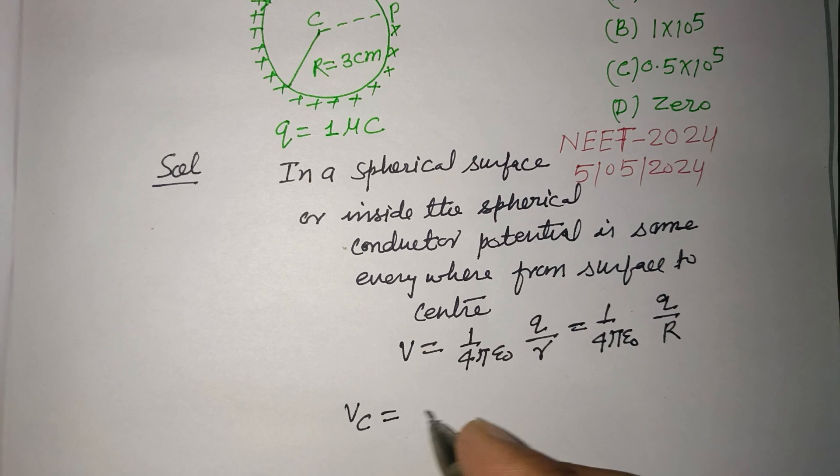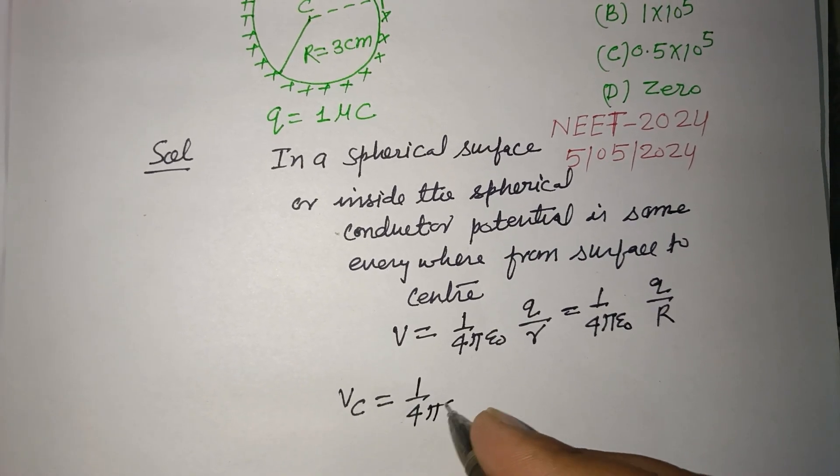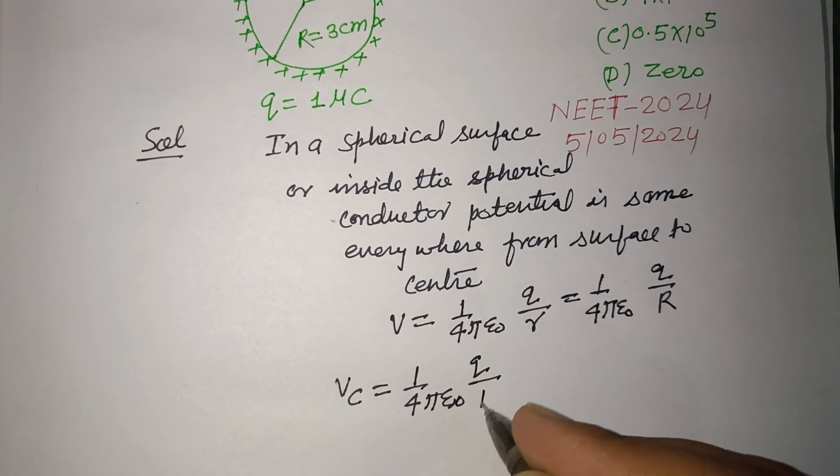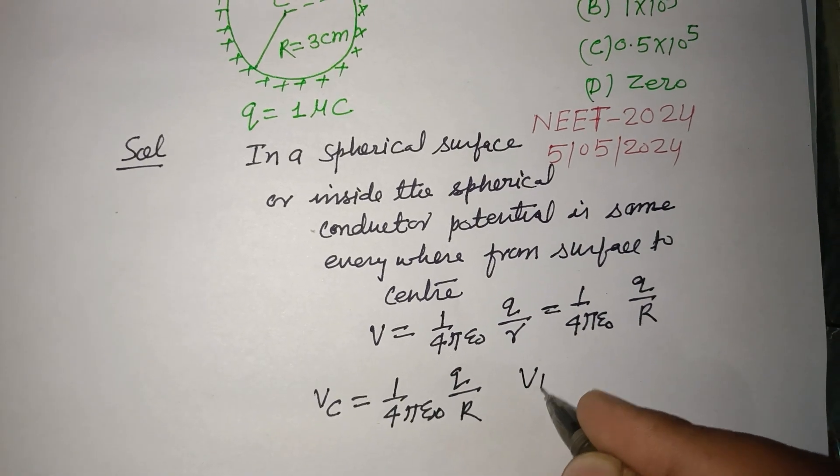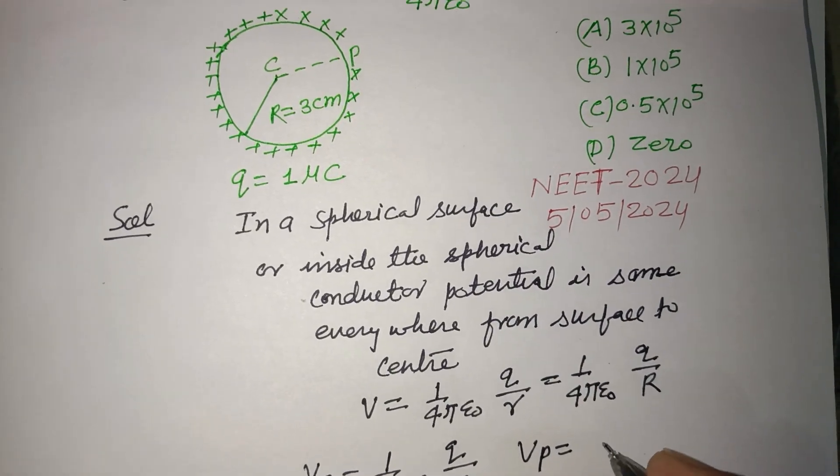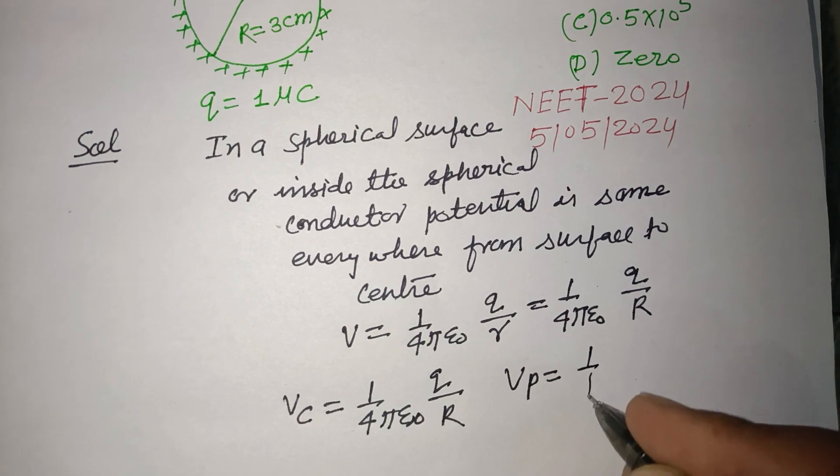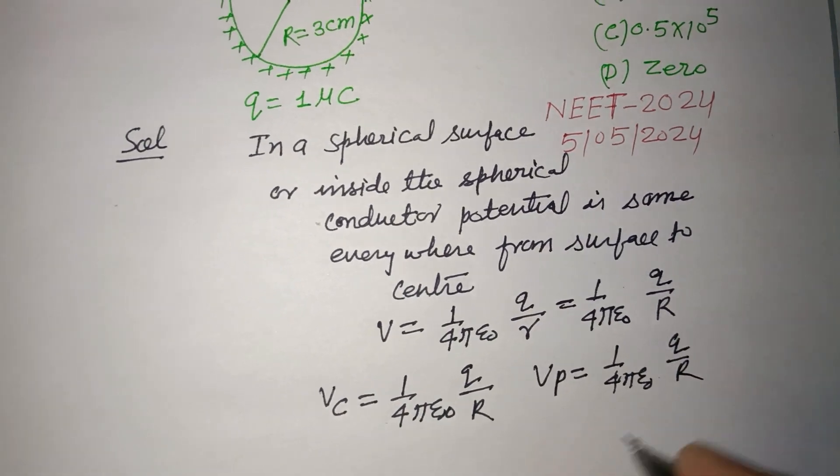So Vc equal to 1 upon 4 pi epsilon naught Q upon R. And also Vp equal to 1 upon 4 pi epsilon naught Q upon R.